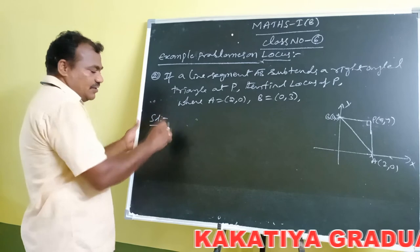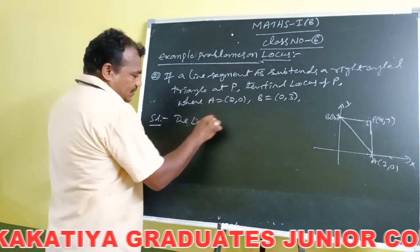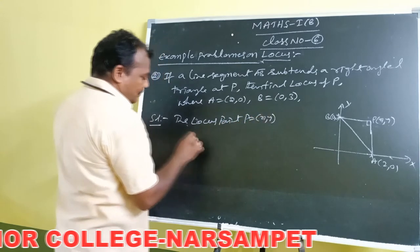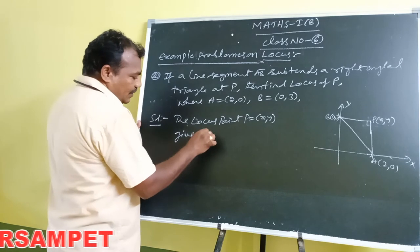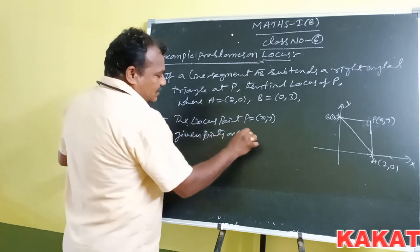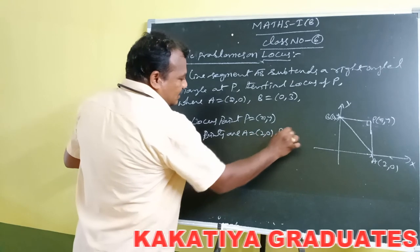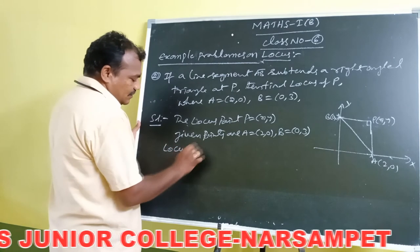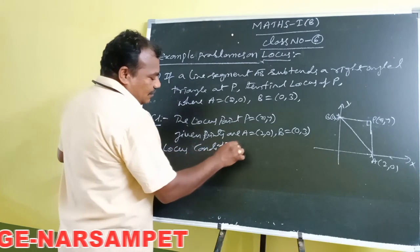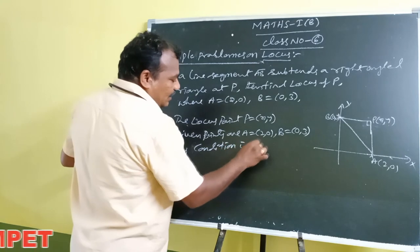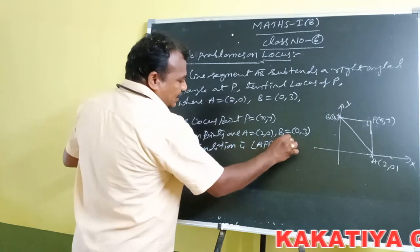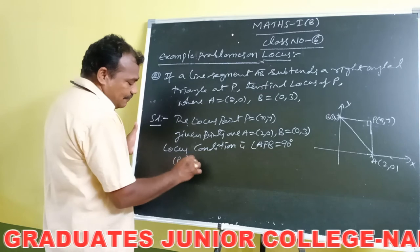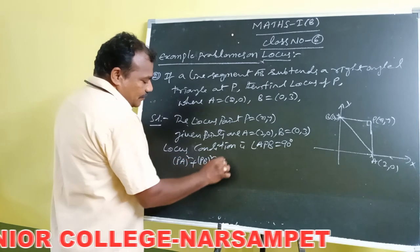For finding the locus equation of P: the locus point coordinates are P equal to (x, y). The given points are A equal to (2, 0) and B equal to (0, 3). The locus condition is angle APB equal to 90 degrees. Applying Pythagoras: PA² plus PB² is equal to AB². PA² is (x minus 2)² plus (y minus 0)², and PB² is (x minus 0)² plus (y minus 3)², equal to AB².